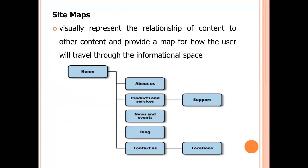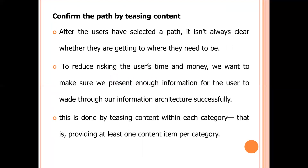Sitemaps visually represent the relation of content to other content, providing a map for how the user will travel through the informational spaces. A typical sitemap includes: Home, About Us, Products and Services, News and Events, Blogs, Contacts and locations. Products and Services shows what the supporters are.